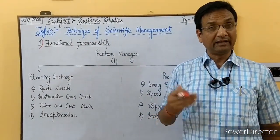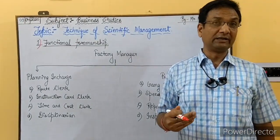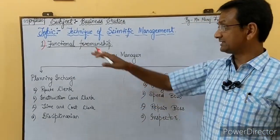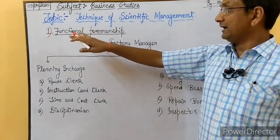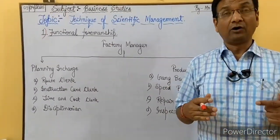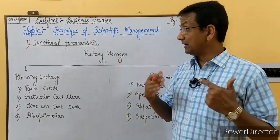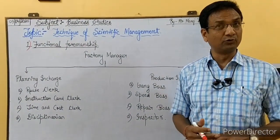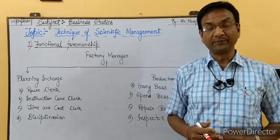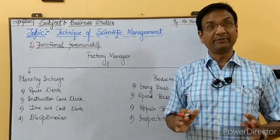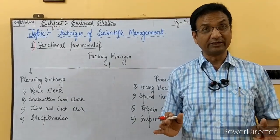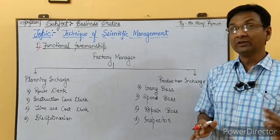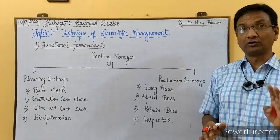Taylor's principles are suitable for big organizations. Taylor said that an organization should have a minimum of eight foremen, which are directly controlled. Foremen means the workers who are in charge. Taylor said that the organization should have eight foremen, so this is suited for big organizations.